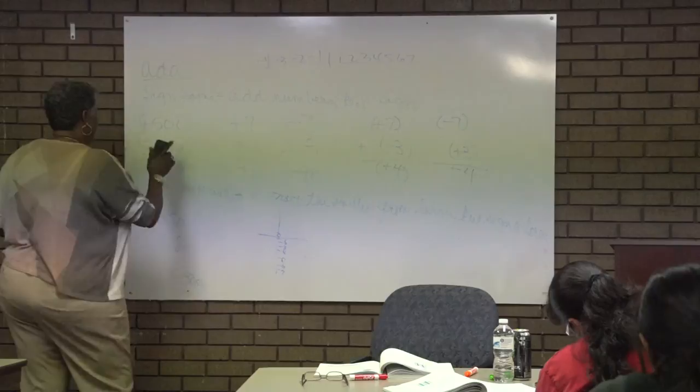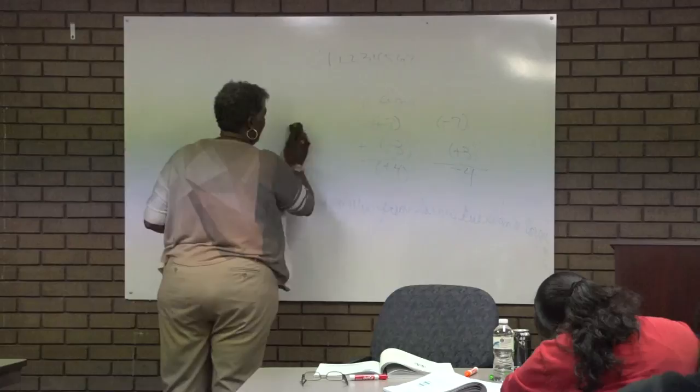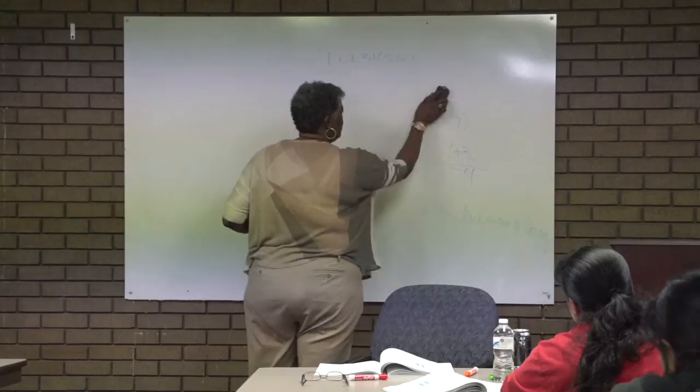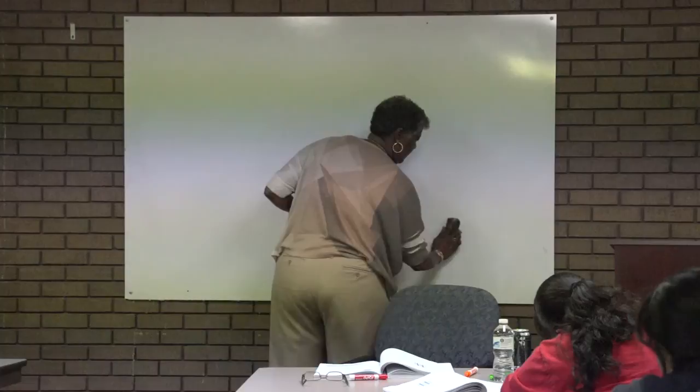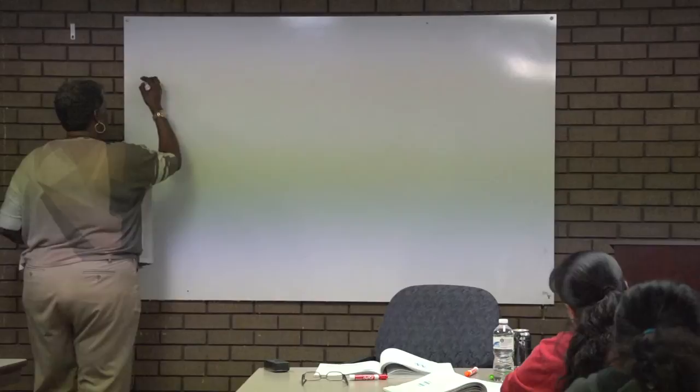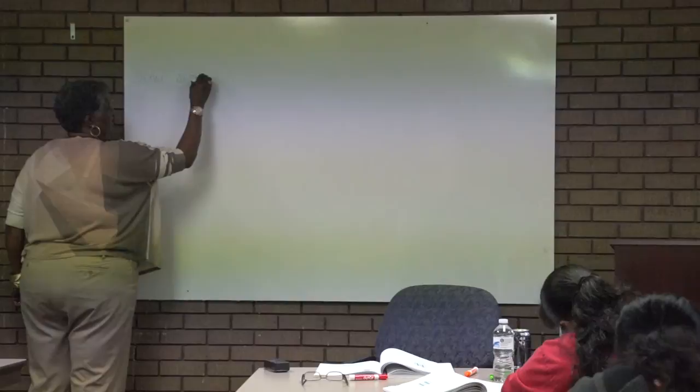When you multiply signed numbers, that's when you've heard that thing — two negatives equal a positive. That's only when you multiply. Because as you saw, when you add them, two negatives still are negative. But when you multiply, any time the signs are the same, the answer is positive. Same sign, the answer is positive.